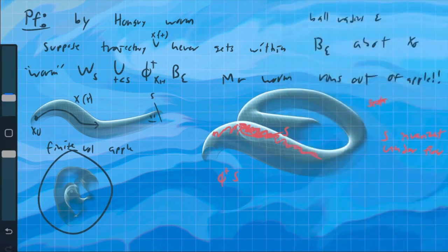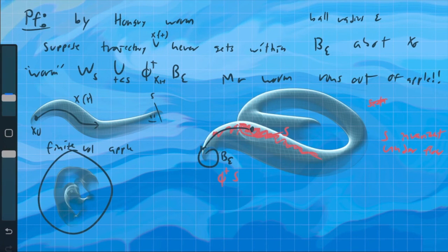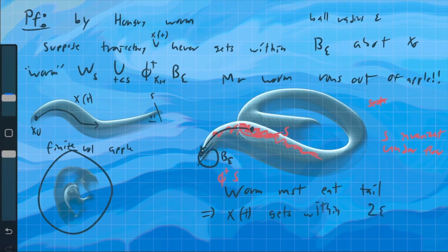Which in particular means that, since it's reversible, I can take any point and move it back to the beginning and put this into this ball of radius epsilon at the origin, which essentially means that at some point in time, the worm must eat its tail. Right? The overlap region between these two sets must intersect with the starting region, which means that the trajectory x of t gets within two epsilon of the start. And we can set epsilon to anything we want. So we can make it as small as we want.